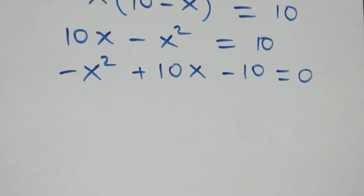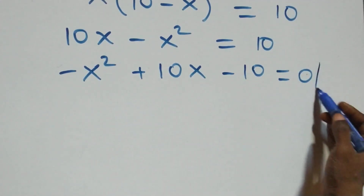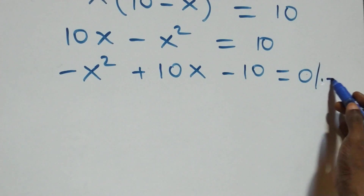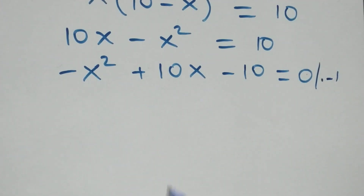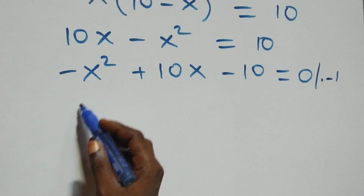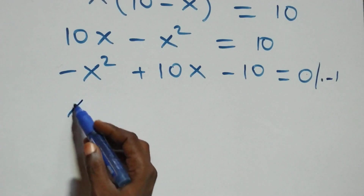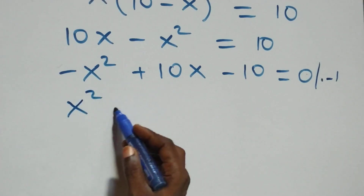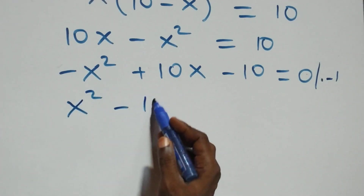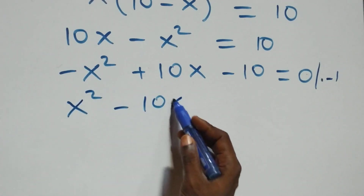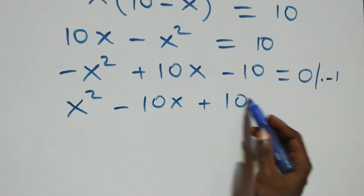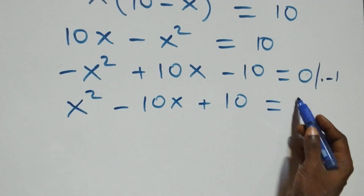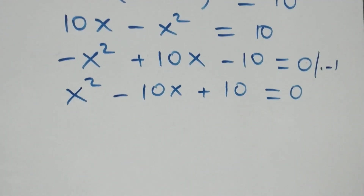Next step, we multiply through by minus one. So minus x squared becomes x squared, minus ten x becomes plus ten x, wait — minus ten x, and minus ten becomes plus ten, which equals to zero. So we have x squared minus ten x plus ten equals to zero.